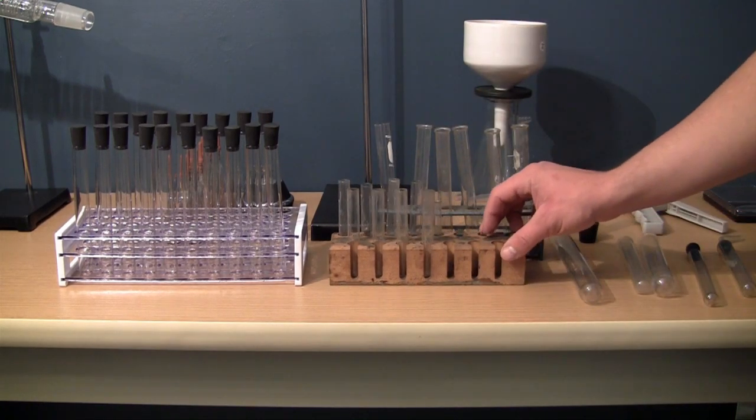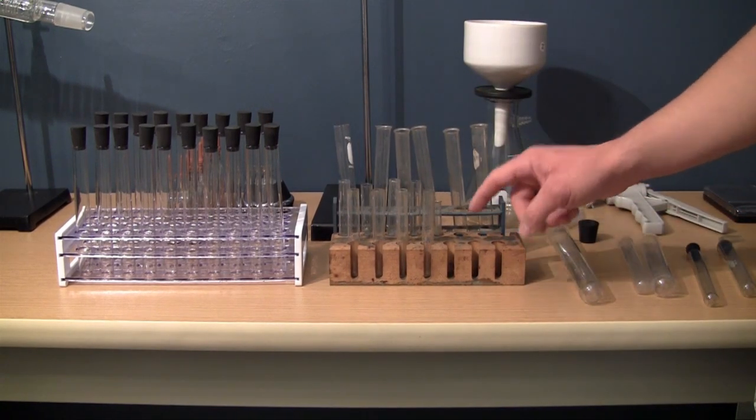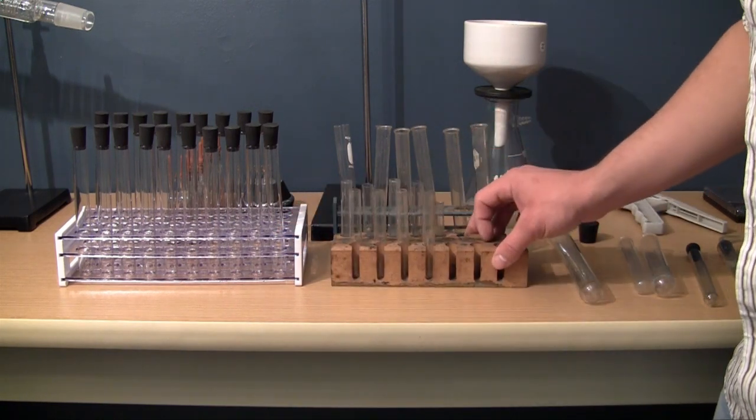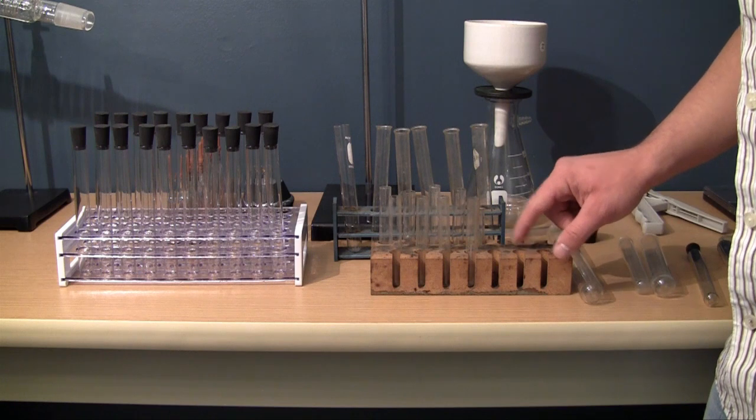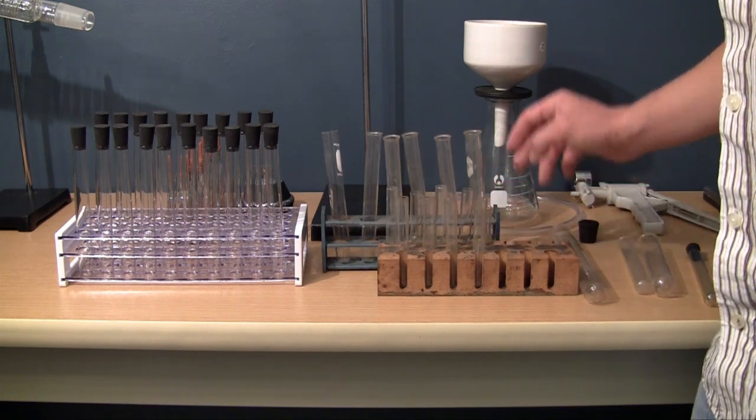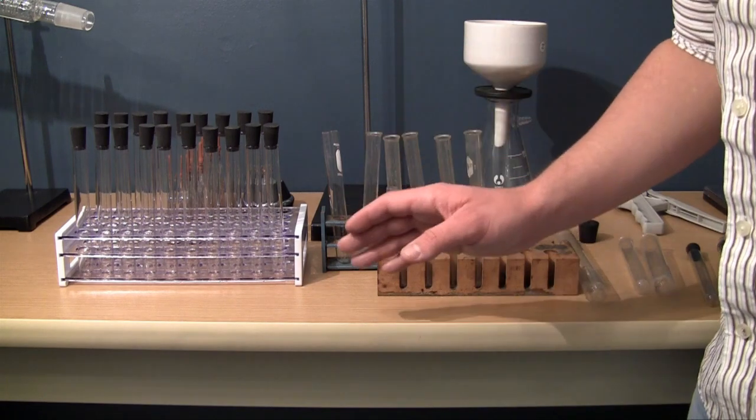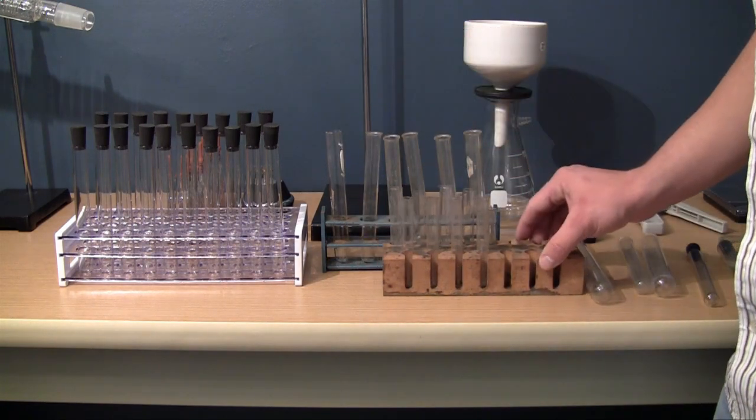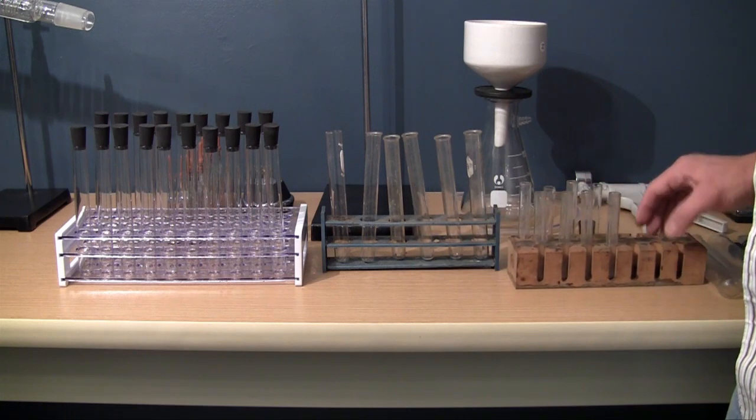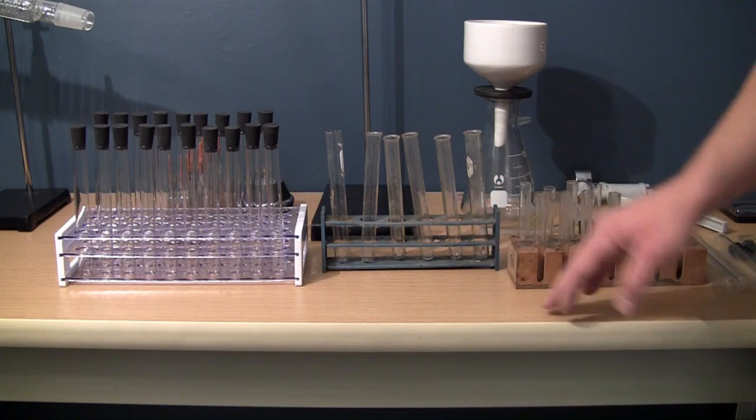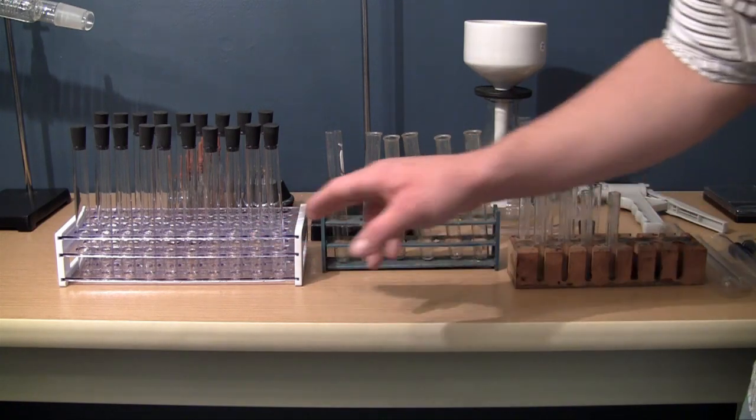And another thing that you definitely want to do is you want to get some kind of test tube rack. This is probably my favorite one, this is an old wood one that I got from actually someone that used to be my science teacher, and this is another rack. But you want a rack because it's a lot easier to store your test tubes and also whenever you're just observing chemical reactions, you can line them up nice and neat and it's a lot easier to observe if you have a rack like this.